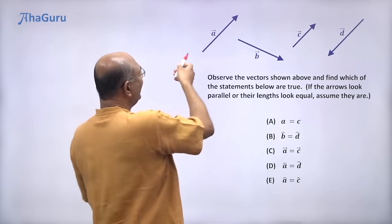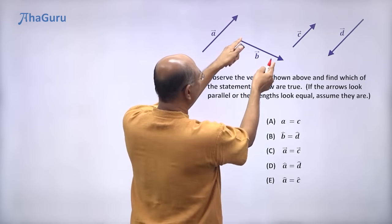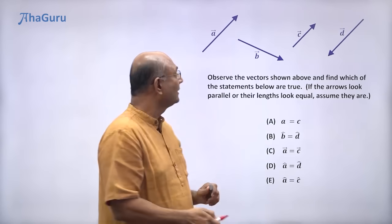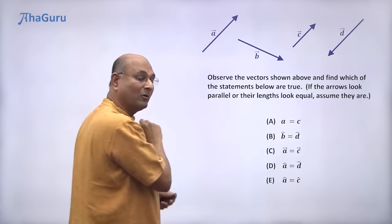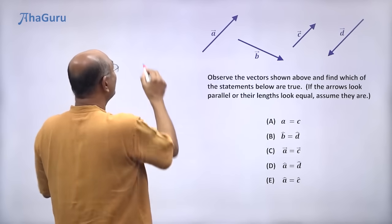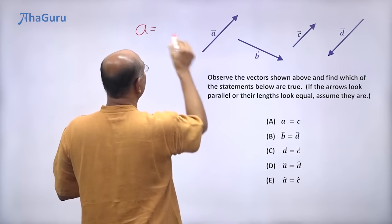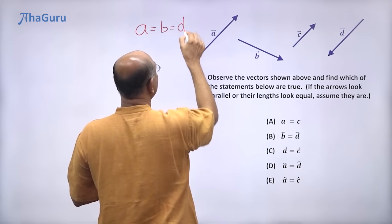Let us think about it. A's length seems to be equal to B's length, right? So these two have equal length. B's length and D's length, they are equal. So A, B and D, they have equal length. How do I talk about length without the arrow? So length of A is equal to the length of B, which is equal to the length of D.